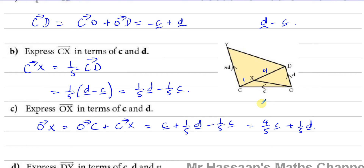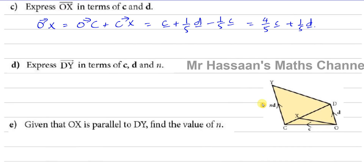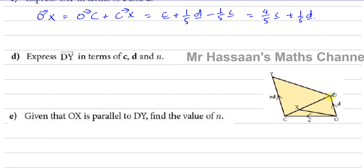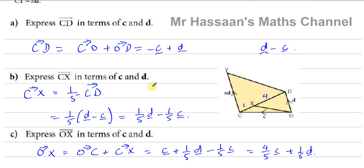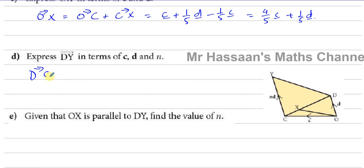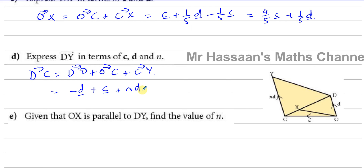Part D asks us to express DY in terms of c, d, and N. We go from D to O, then O to C, then C to Y. D to O is minus d, O to C is c, and C to Y is Nd. So DY equals minus d plus c plus Nd, which can also be written as c plus (N minus 1)d.